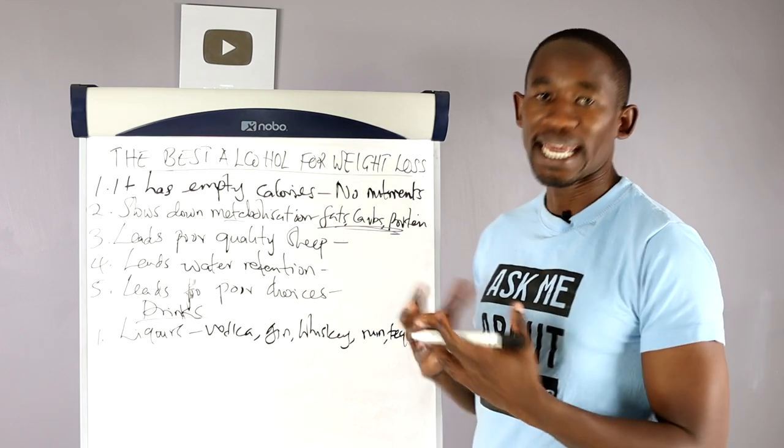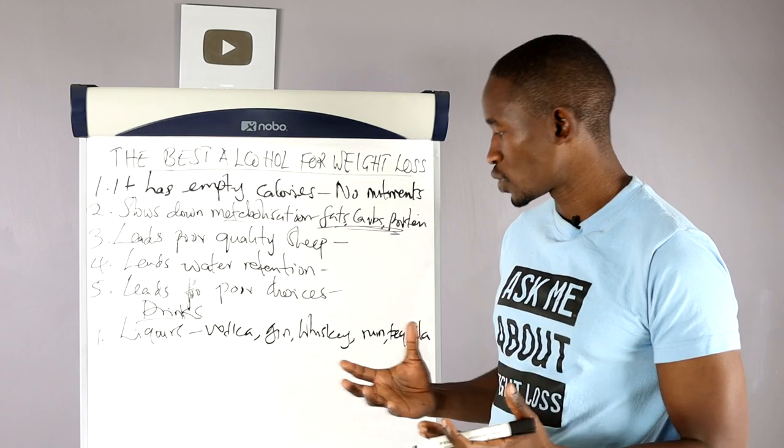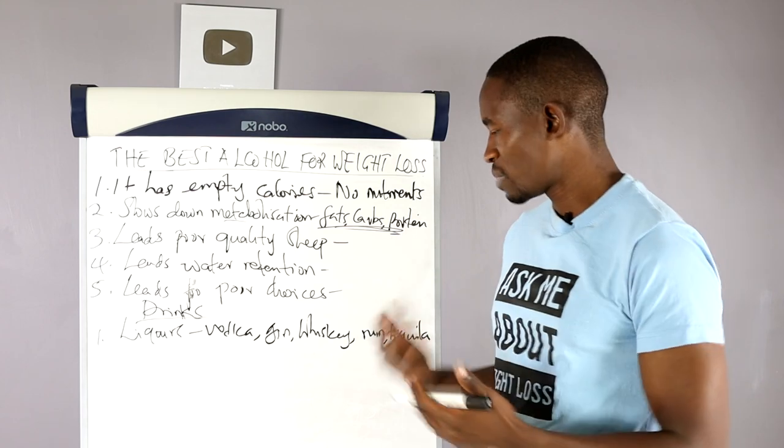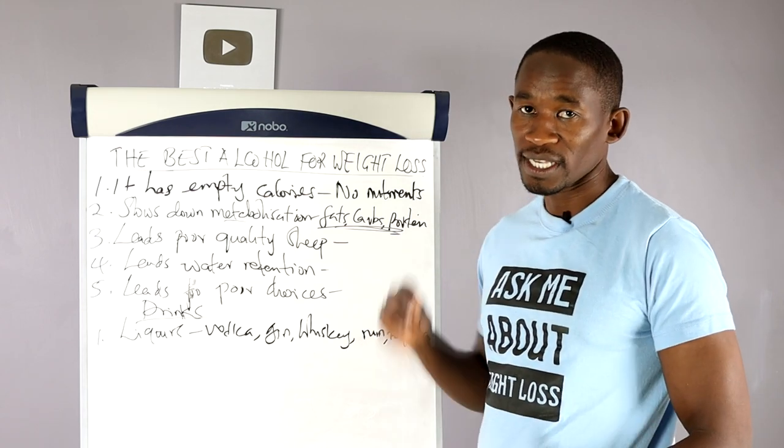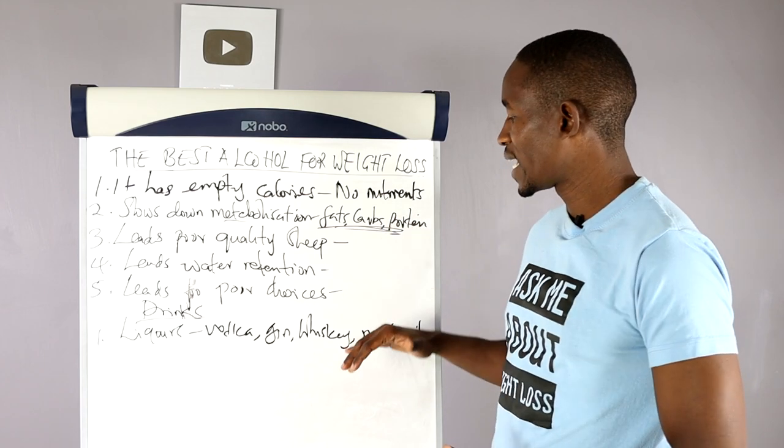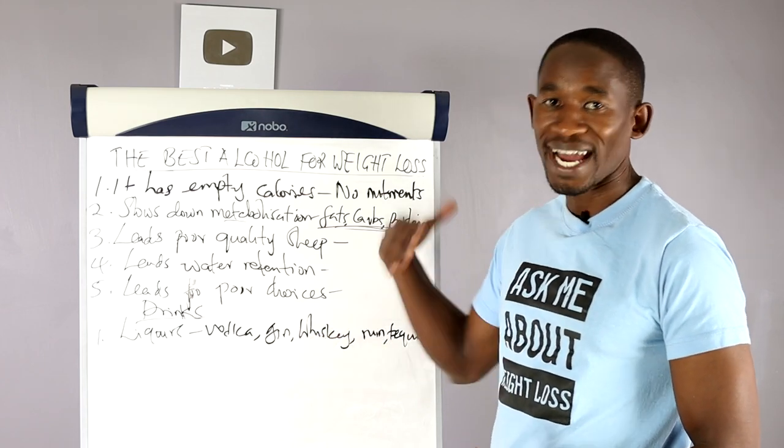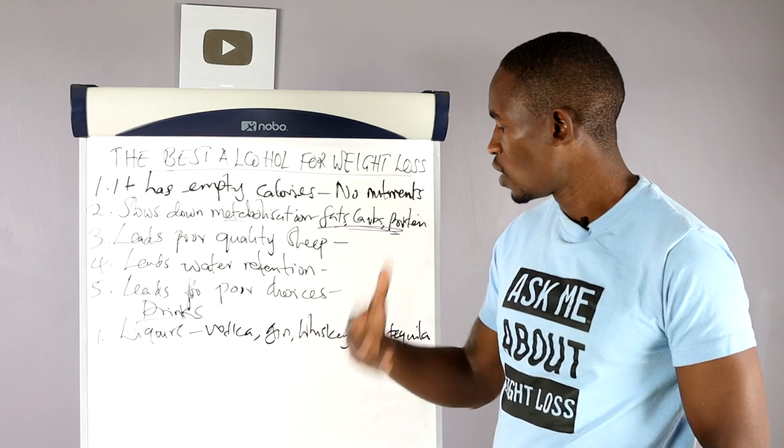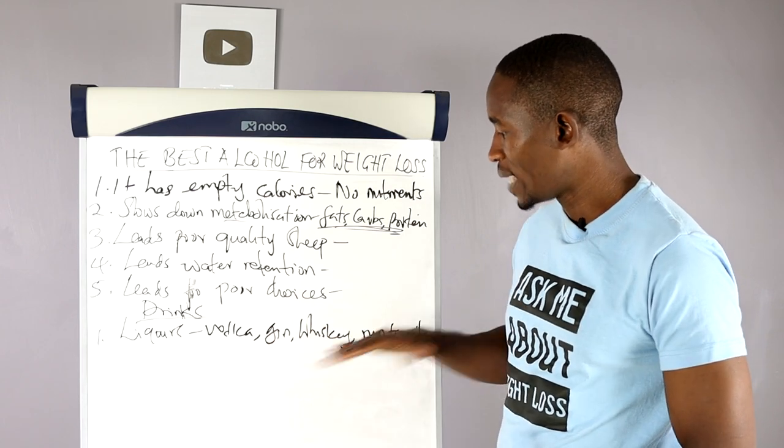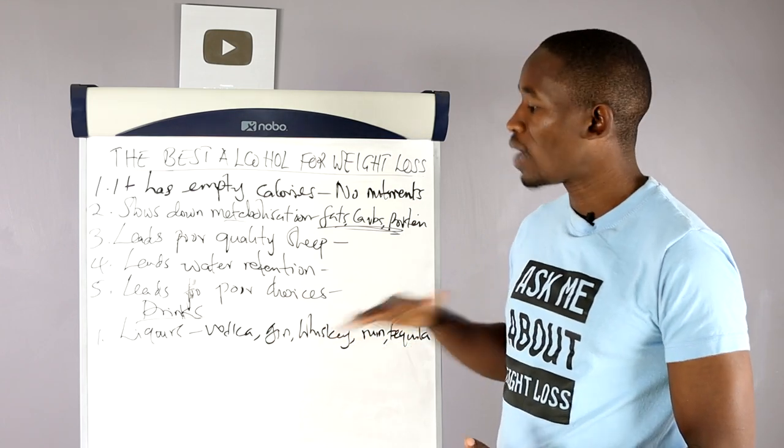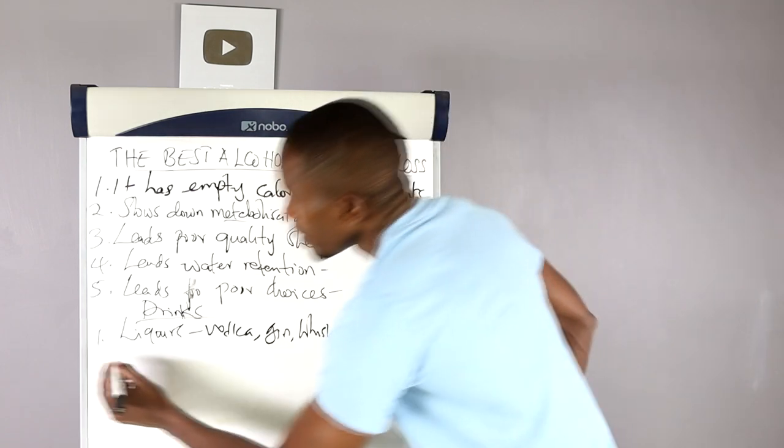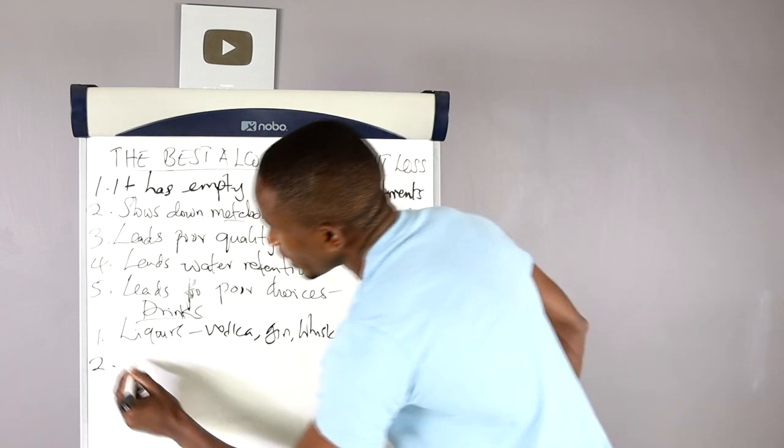Rum and tequila. So you can take these drinks. They are very low in calories. One shot has about 90 calories. So if you take one or two shots, you won't be getting excess calories. But make sure that you're not mixing these drinks with high calorie beverages like soda or fruit juice. Just take them plain or mix them with water or ice cubes.